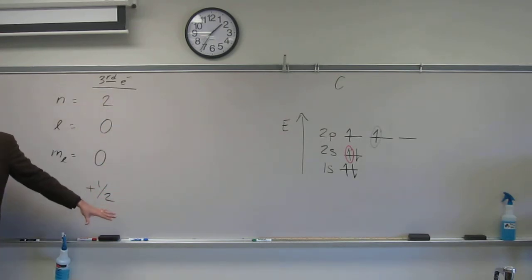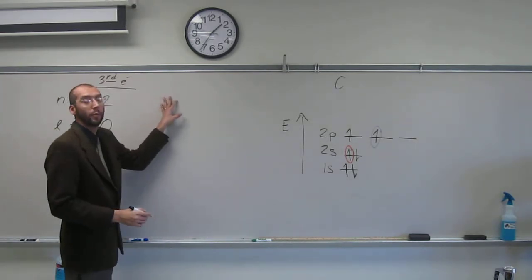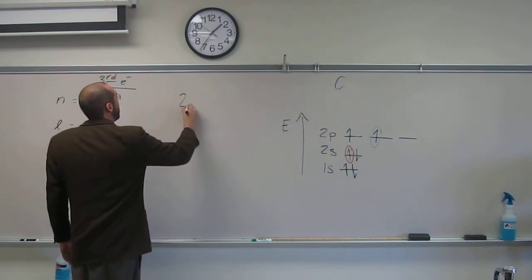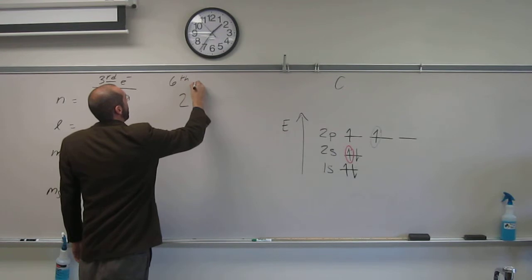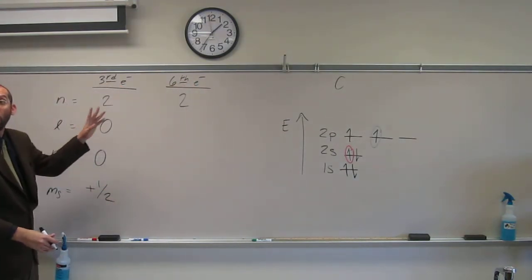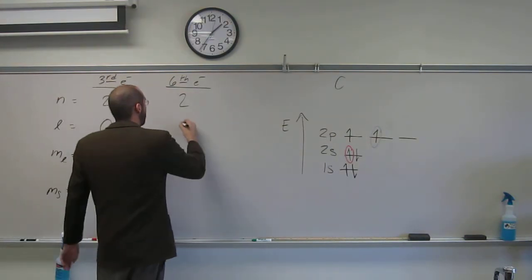Does that answer your question? Okay, so let's do number 6 now. So what would n be in this case? 2, again. 2, l, 1, 1, right, because it's a p orbital in this case.